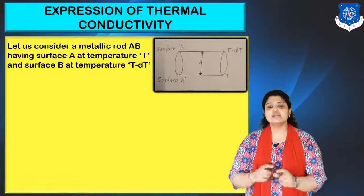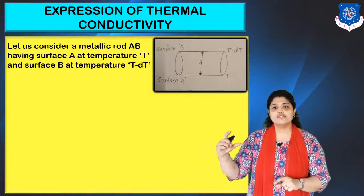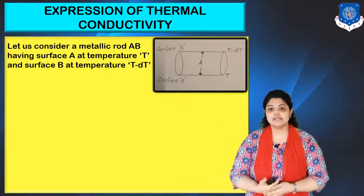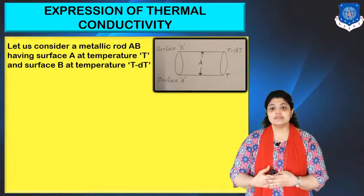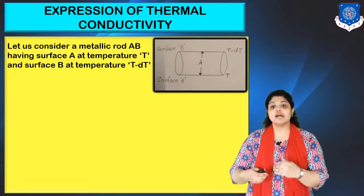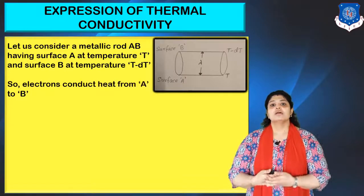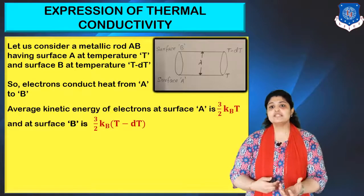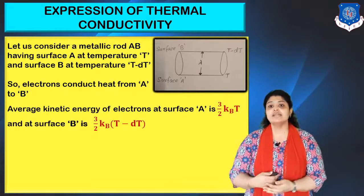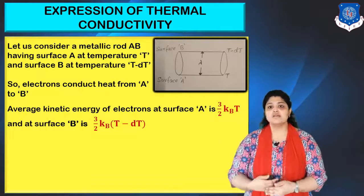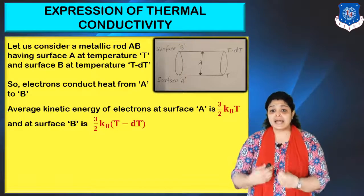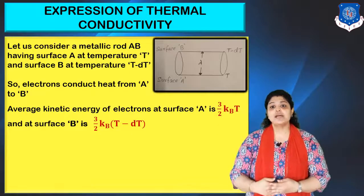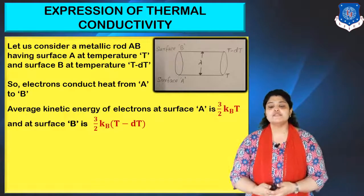Consider a normal metal rod with surface A at temperature T and surface B at a lower temperature T − dT. Electrons will move from A to B, i.e., from higher to lower temperature, conducting heat. If A is at a higher temperature, the kinetic energy of electrons is higher at A and lower at B. Average kinetic energy at surface A is (3/2)kT and at surface B is (3/2)k(T − dT).